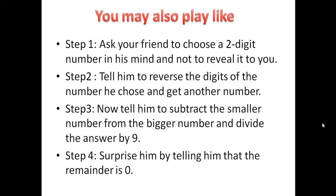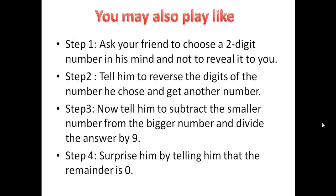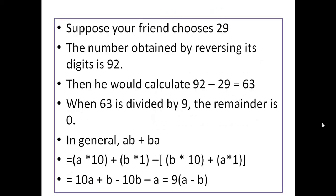Now a similar game: ask your friend to choose a two-digit number and reverse its digits as before. This time, tell him to subtract the smaller number from the bigger number and divide the answer by 9. Surprise him by telling him the remainder is 0. The difference here from Game 1 is that we subtract instead of add and divide by 9 instead of 11.